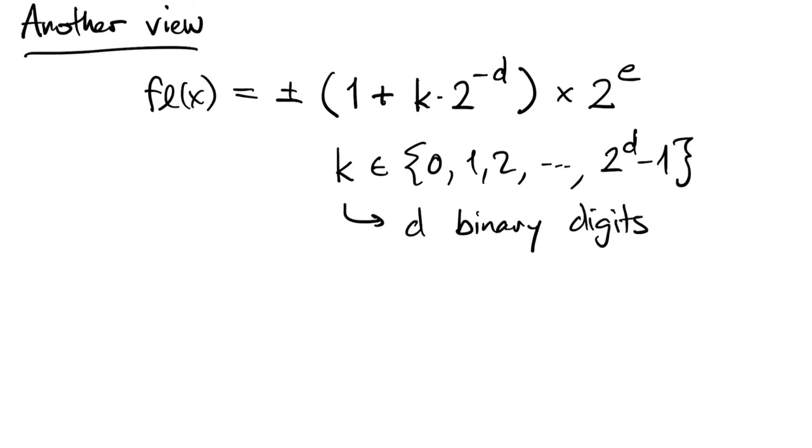If we think in binary, we can look at these values between 1 and 2 as a binary expansion. So, we have 52 binary digits.